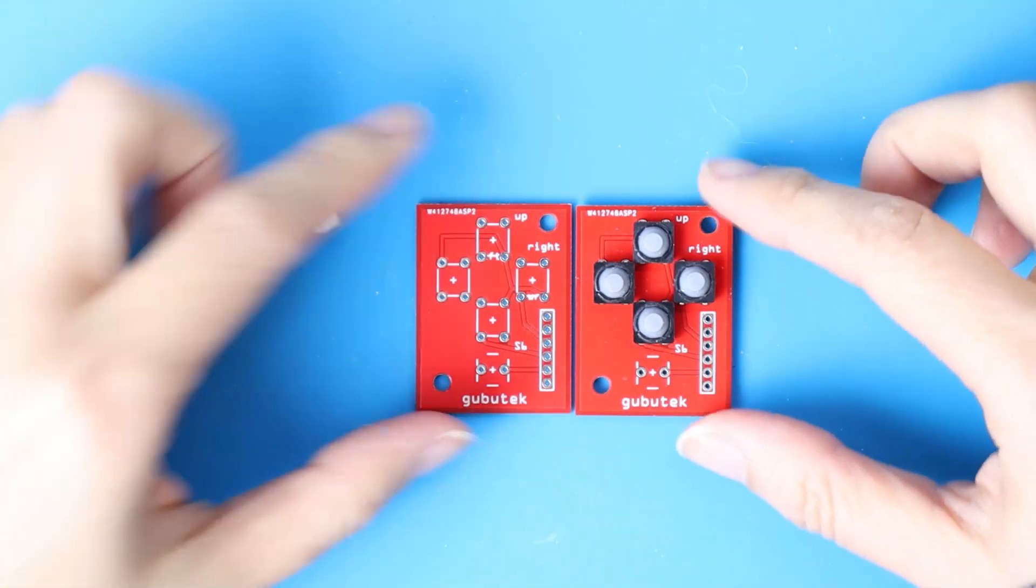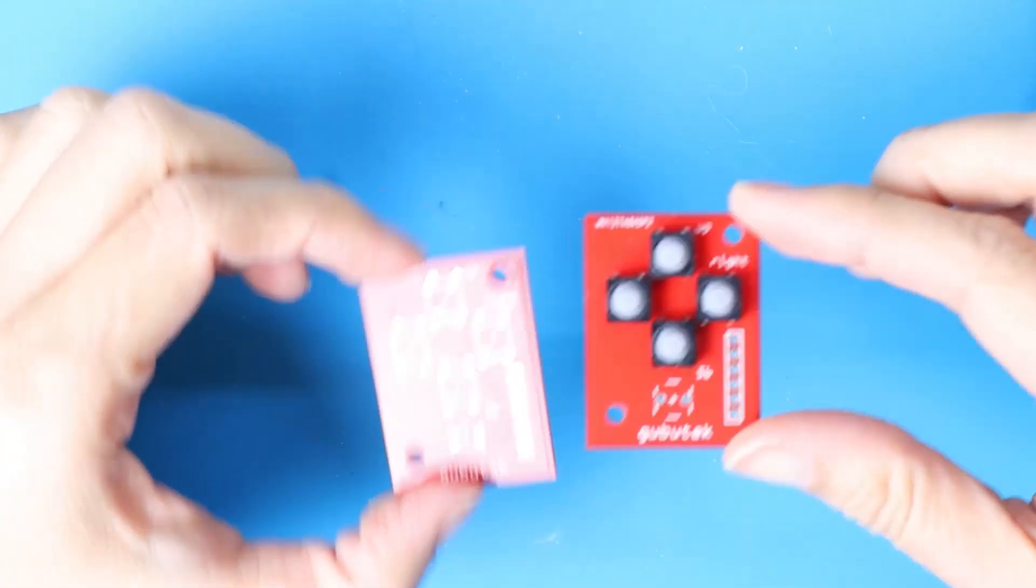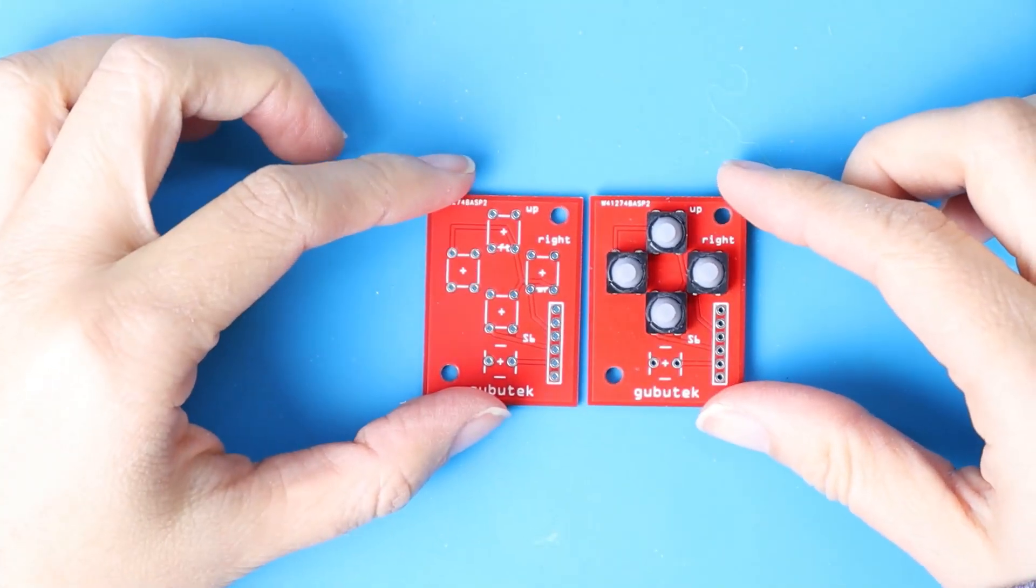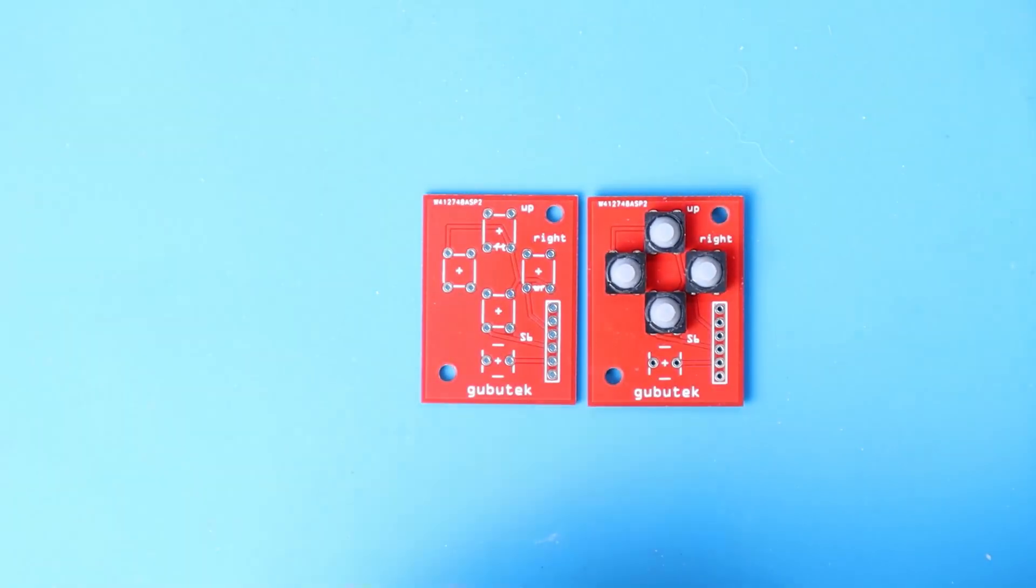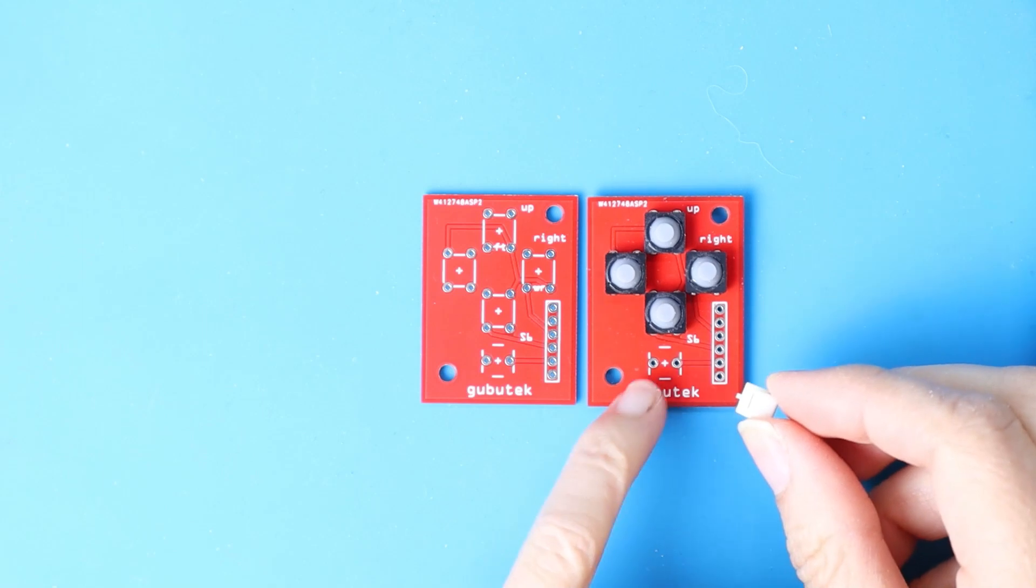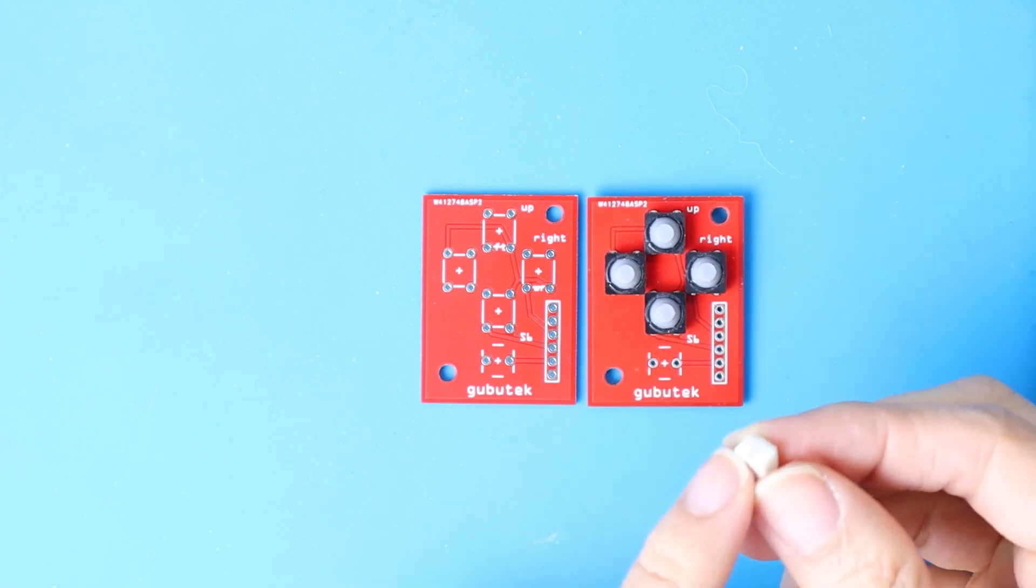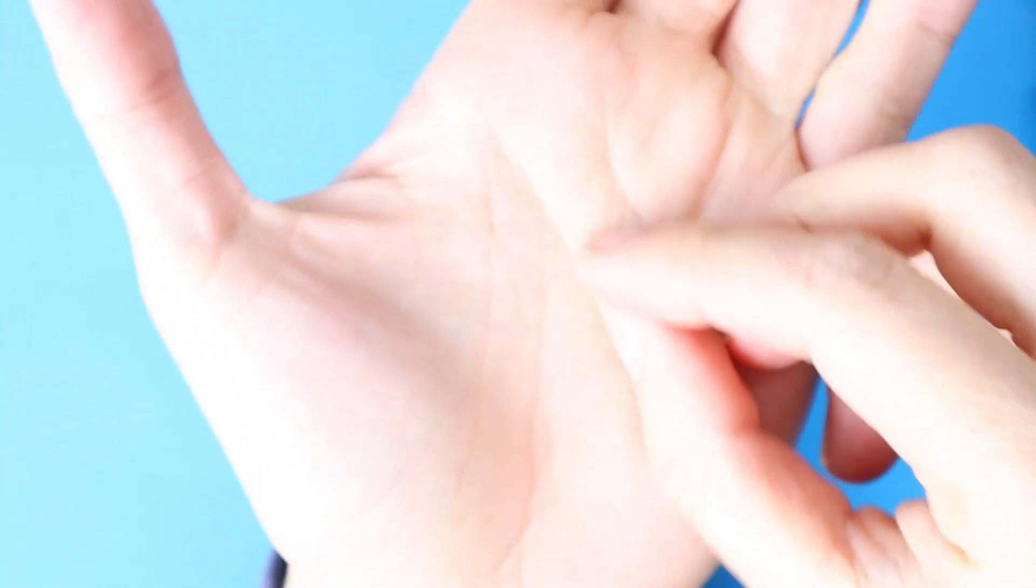This is the circuit I asked PCBWay to make for me. It's fine except that I forgot to adjust this footprint for the SMD button, and you can see it here.